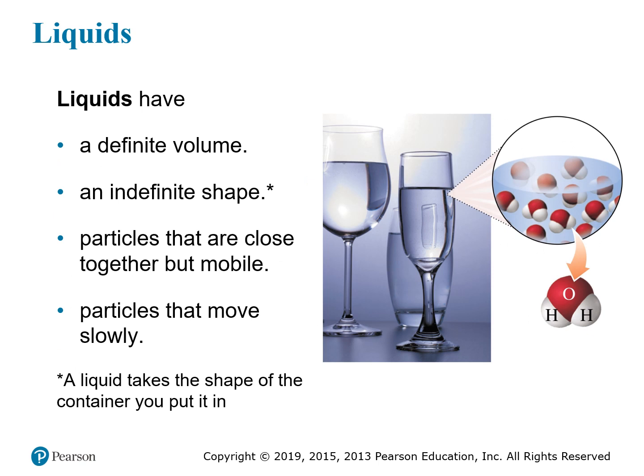Liquids, on the other hand, do have a definite volume, but their shape is indefinite. They can adapt or take the shape of whatever container you put them in. This is because even though the particles are very close together — as they are in solids — they're mobile. They can move past one another and are not locked into a fixed position. The particles move slowly, and a molecule of water on one side of a glass will move over time and randomly go throughout the whole volume of the water eventually. The particles are still packed close together, but they're mobile and move past one another easily.